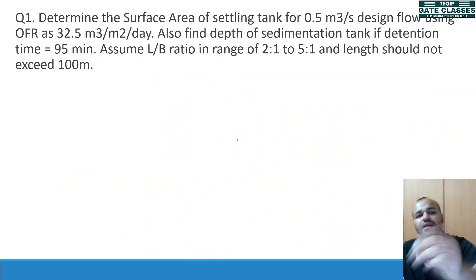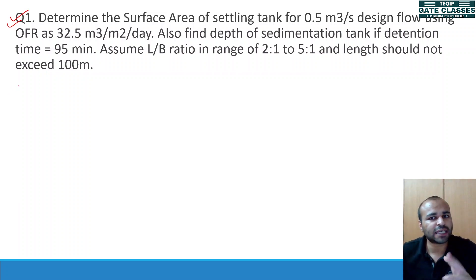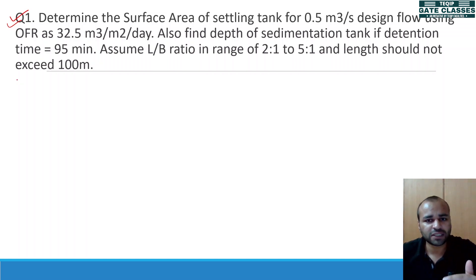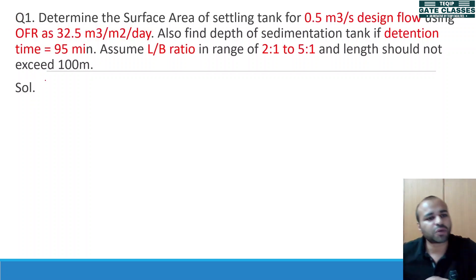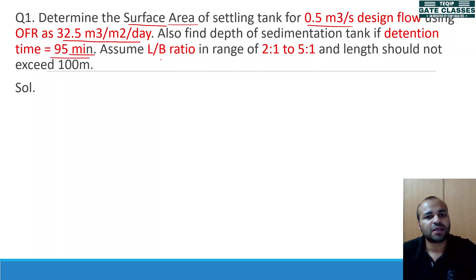Starting with the question I gave you in the previous lecture to solve - I have also shared all the questions as a single practice sheet in the Telegram group. I hope many of you tried the problems. So let us now see how we solve these problems. The important data given: we need to determine the surface area of a sedimentation tank. Design flow is 0.5 m³/s, OFR is 32.5, and detention time is 95 minutes.